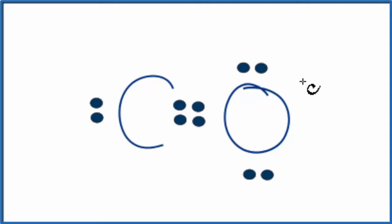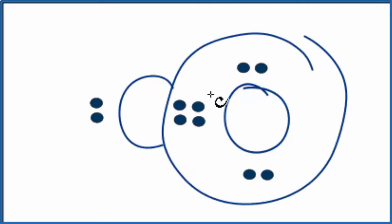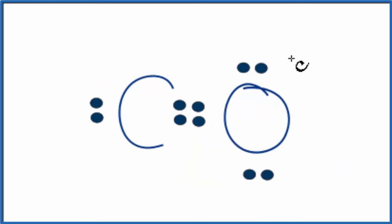For the oxygen, we have eight valence electrons. For the carbon, we have six. So it's a little bit better. Next, we can take and put another two in the center here.